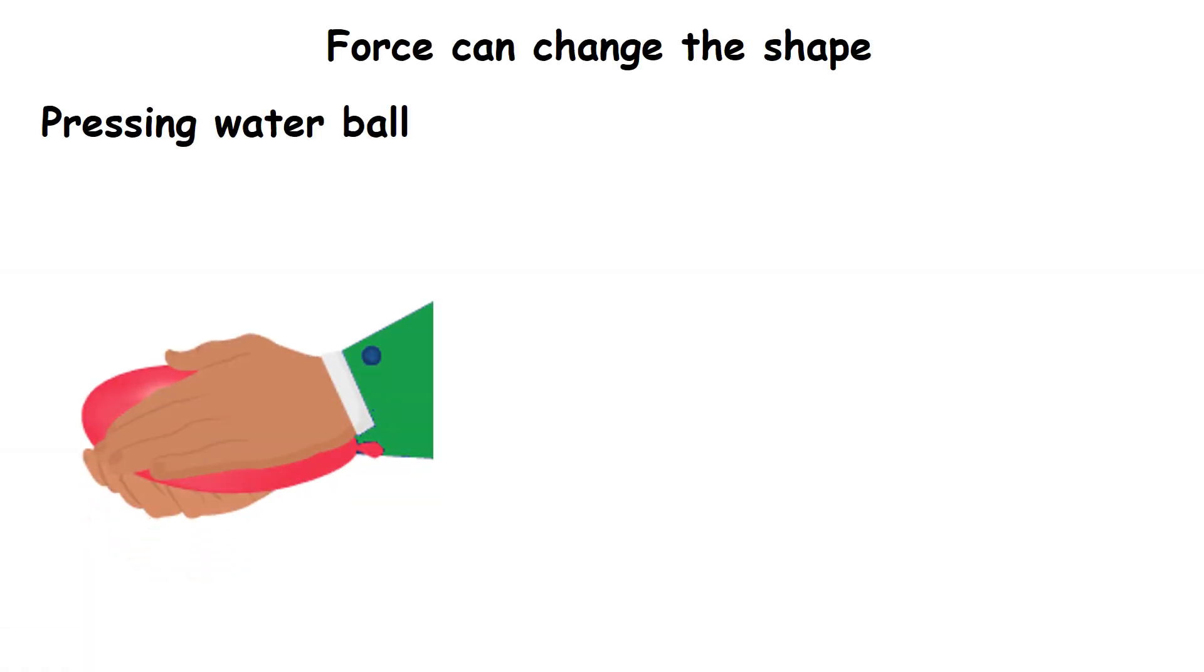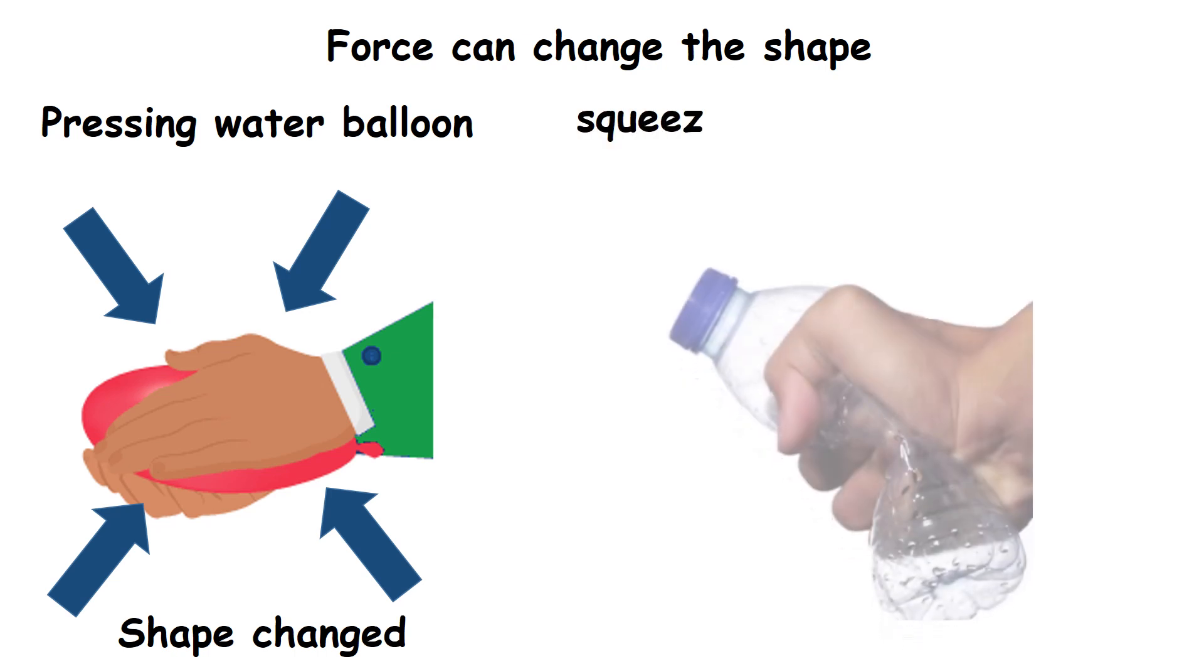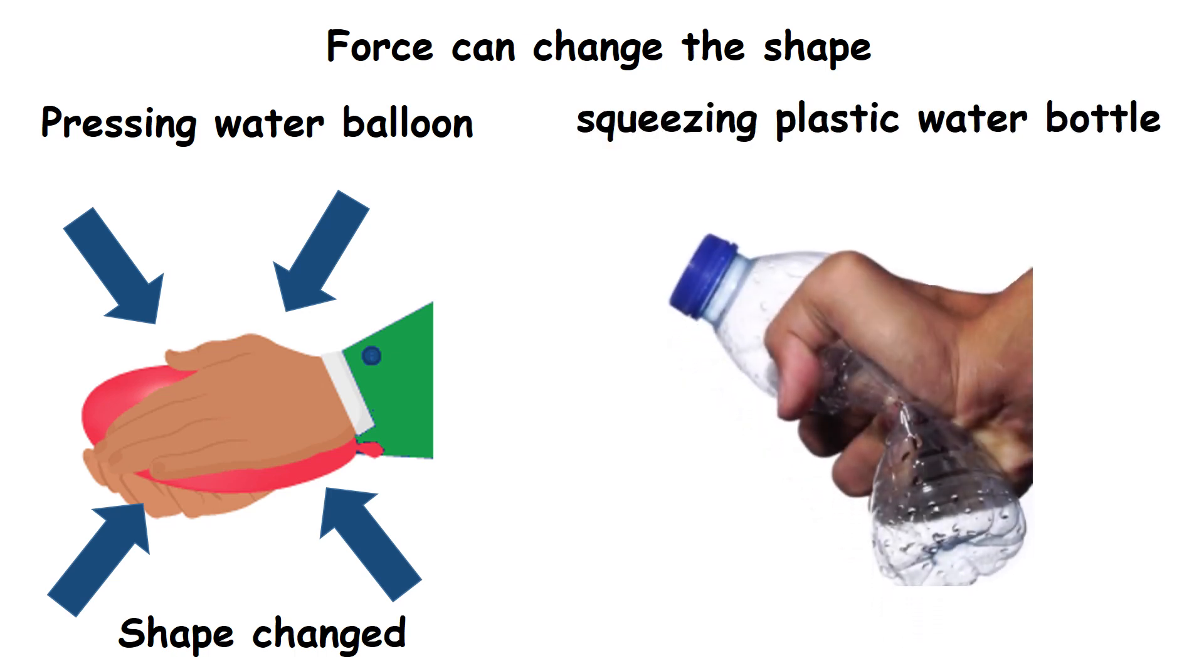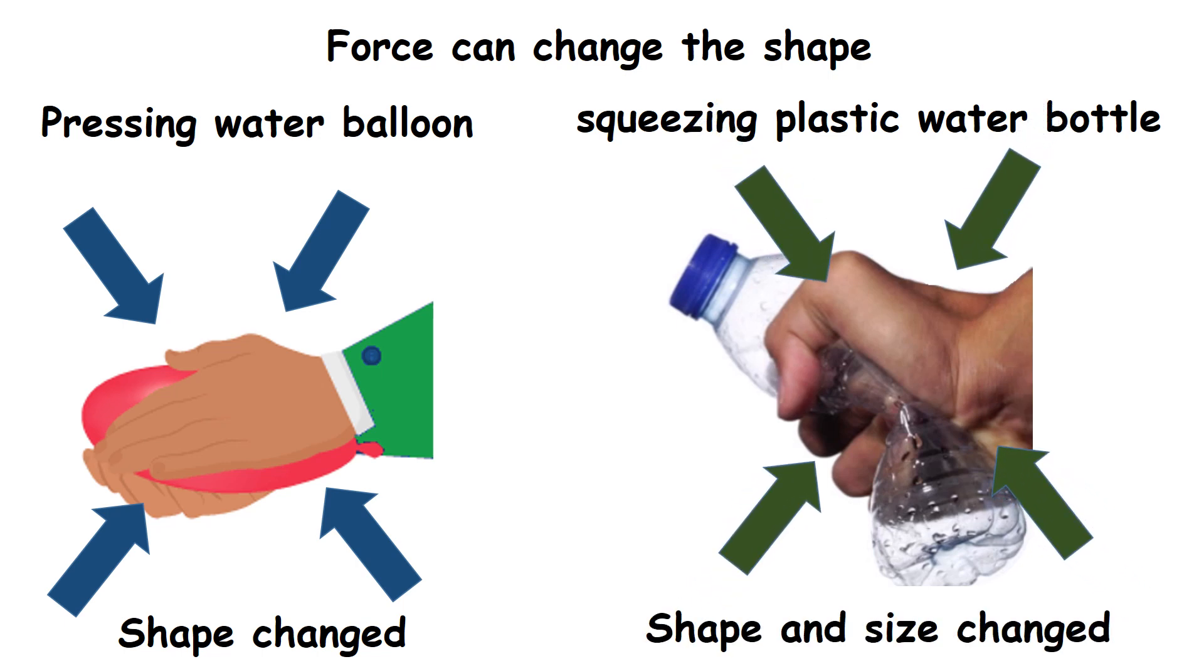Force can change the shape. When water balloon is pressed, some force is applied on all sides of the balloon. Thus it changes its shape. While squeezing a plastic water bottle, force is applied on all sides of the bottle. Thus the shape and the size of the bottle is changed.